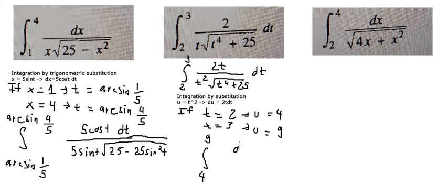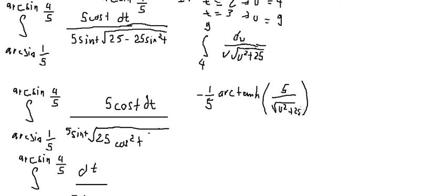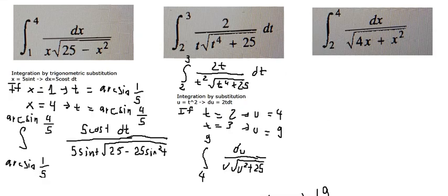So we change du. This expression becomes u over u squared plus 25. This integration gives us about negative 1 over 5. We put the boundary from number 4 to number 9, substitute the numbers in, and we get the final answer. Now let's go to the last one.